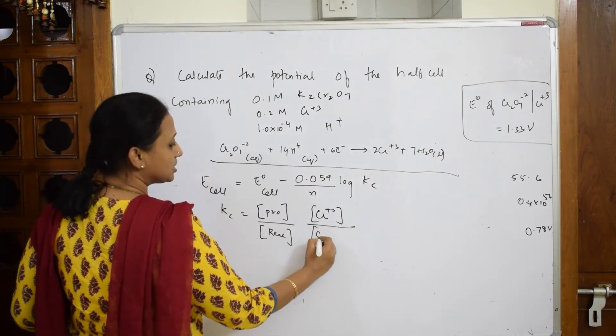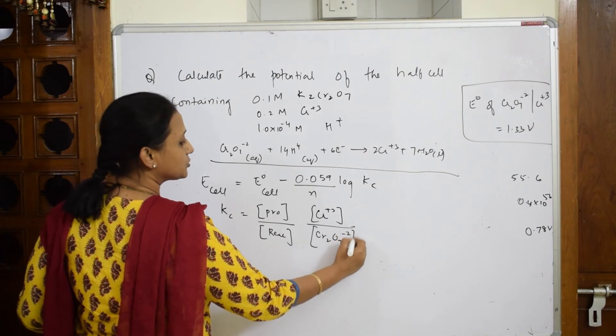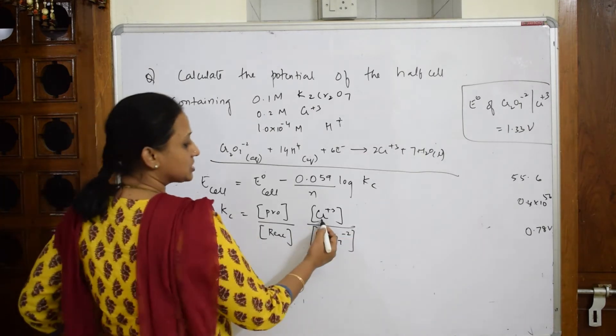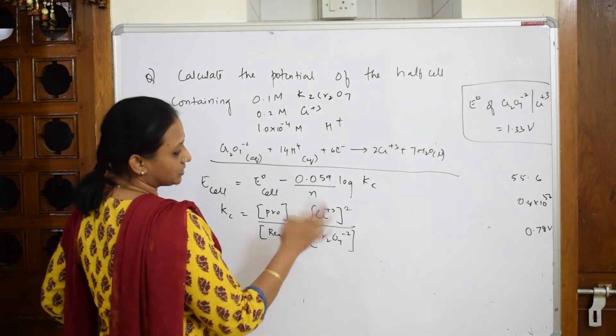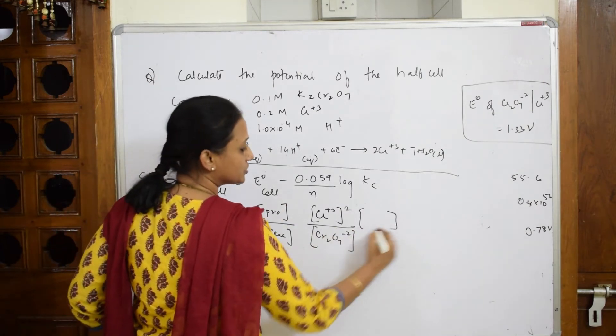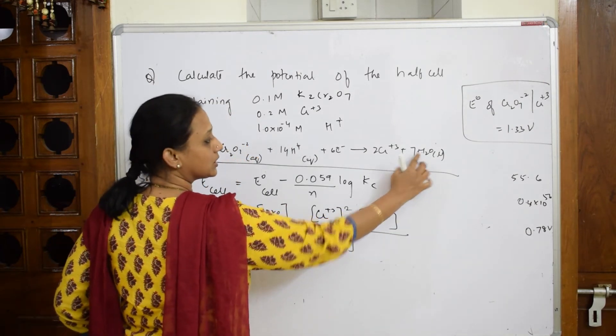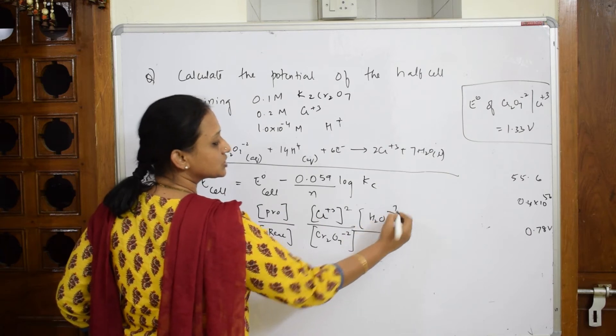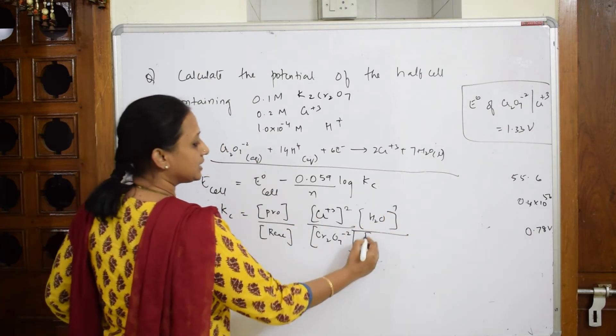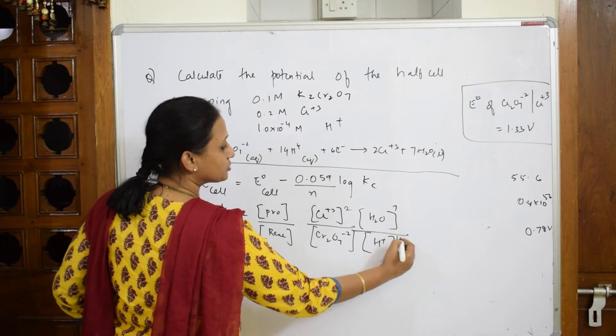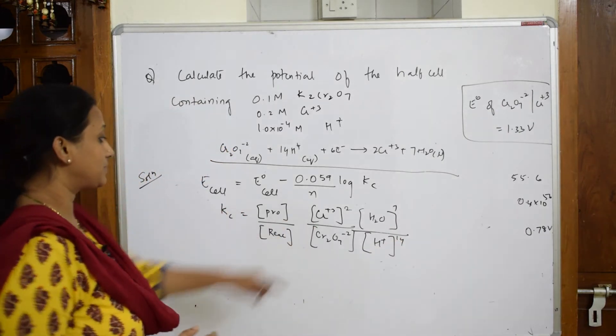Now this is raised to the power 2. There is nothing else, there is no coefficient. Now second comes your water: H2O raised to the power of 7 divided by H+ which is raised to the power of 14. Now come back and substitute.